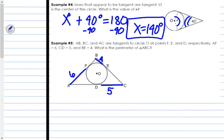Well, if BE is 4, that means BF is 4. If AF was 6, AD is also 6. And if CD was 5, CE is also 5.